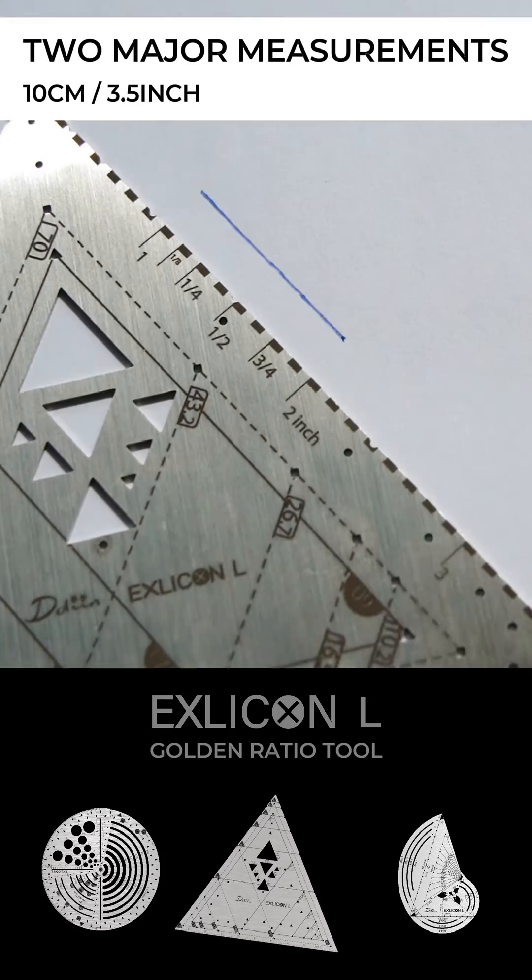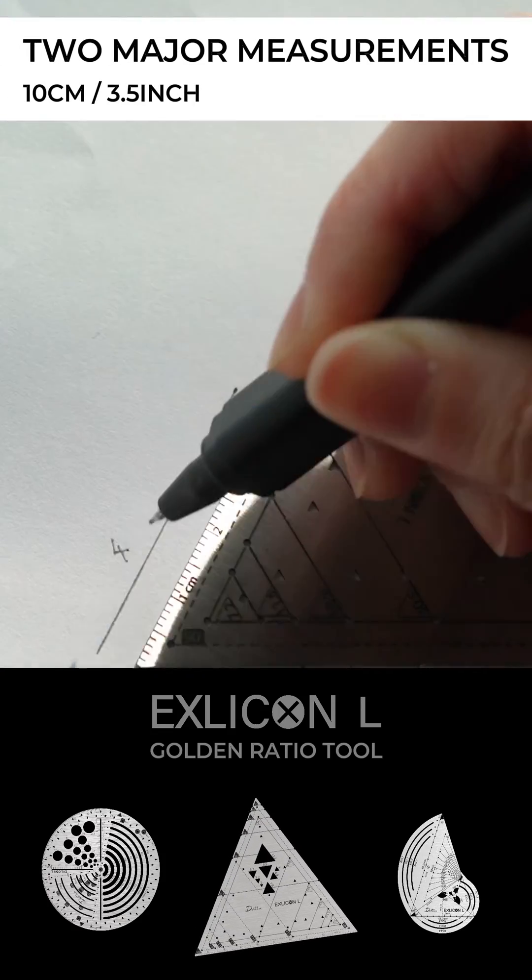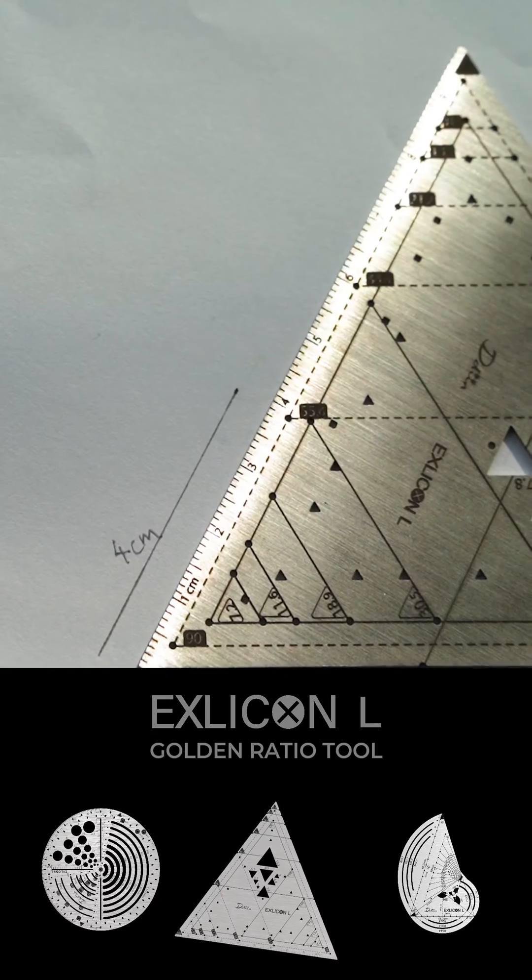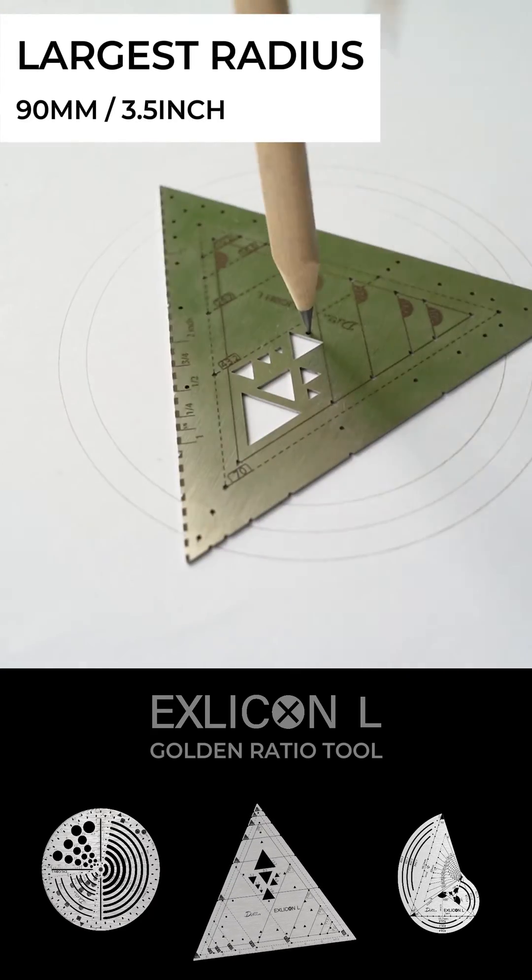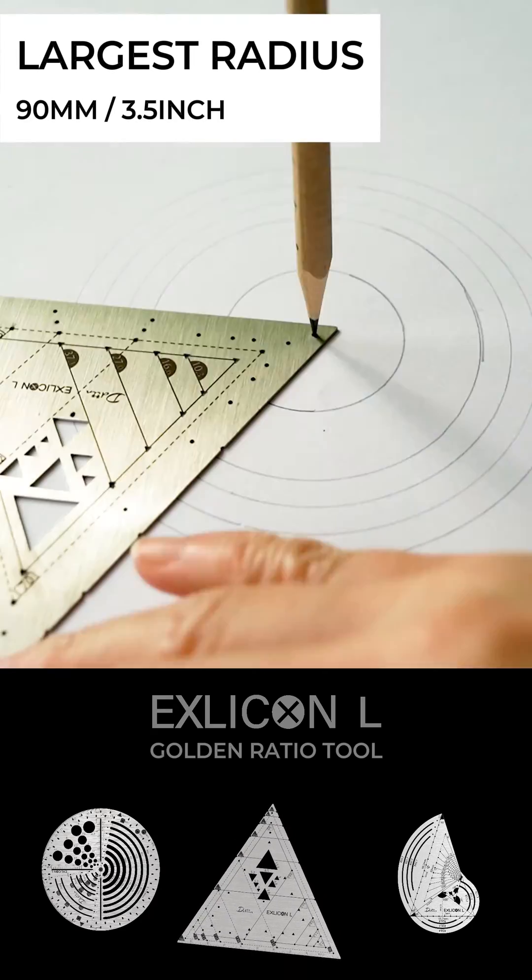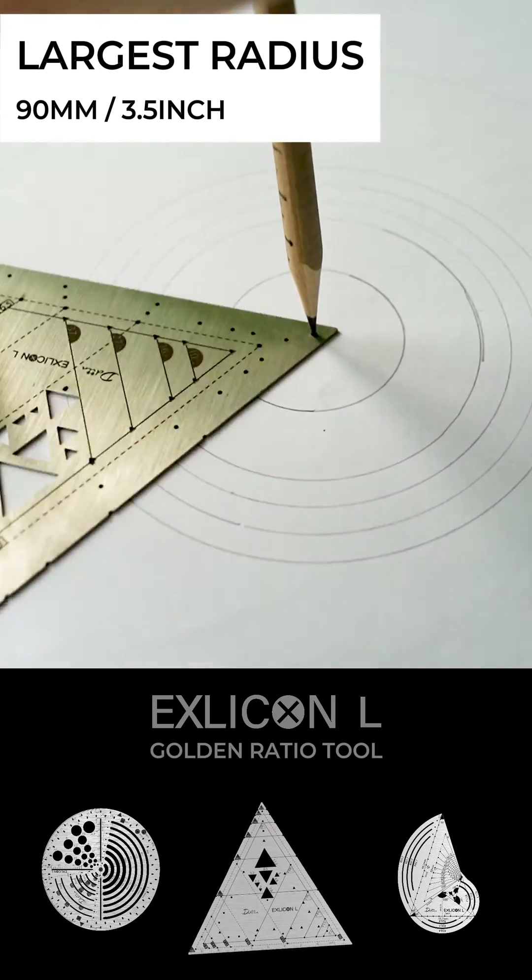You can accurately measure and sketch shapes using 10 centimeters and 3.5 inch ruler. Plus, you can draw circles from the smallest 7.2 millimeters radius to 90 millimeters largest radius circles.